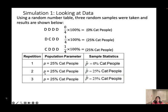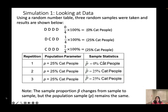We know that the sample proportion changes from sample to sample — it really depends on how you pick. If I pick two cat people and two dog people, my sample proportion becomes 50% cat people. The sample proportion changes from sample to sample, but the population proportion remains the same — it won't change, because this is the population.